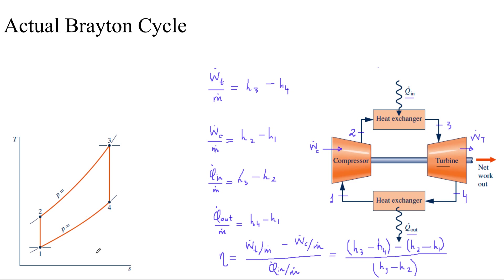For the purpose of this discussion we're going to only look at the internal irreversibilities that take place within the compressor and the turbine. Irreversibilities also take place within the heat exchangers but those are because of the frictional pressure drops and they're less significant sources of irreversibilities, so we are going to ignore those in our discussion.